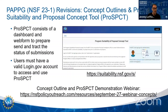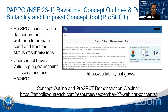PROSPECT is another acronym — it's short for the Program Suitability and Proposal Concept Tool. If there is an NSF funding opportunity that requires a concept outline, there will be instructions on whether it's being done by email or via PROSPECT, and specific guidance on email formatting or use of this web form.